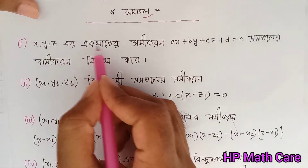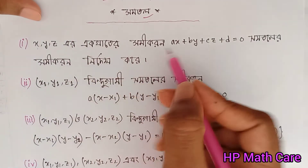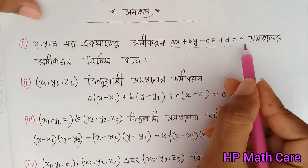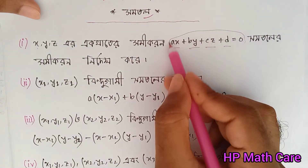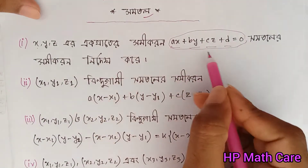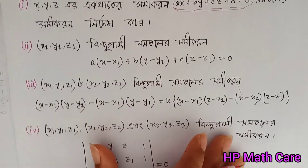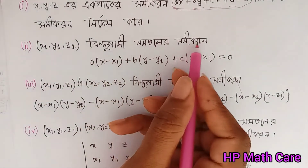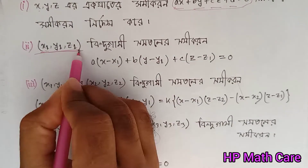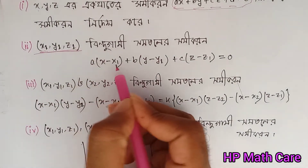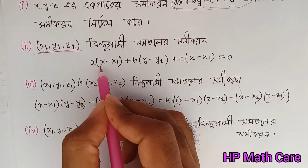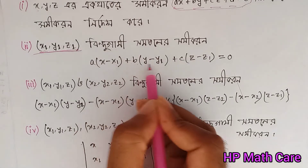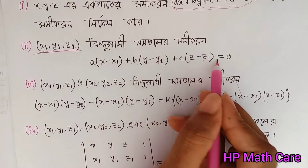x, y, z and ax plus by plus cz plus d equal 0. So what do you think about this? Let's see: x1, y1, z1 is going to be a into x minus x1, plus b into y minus y1, plus c into z minus z1.